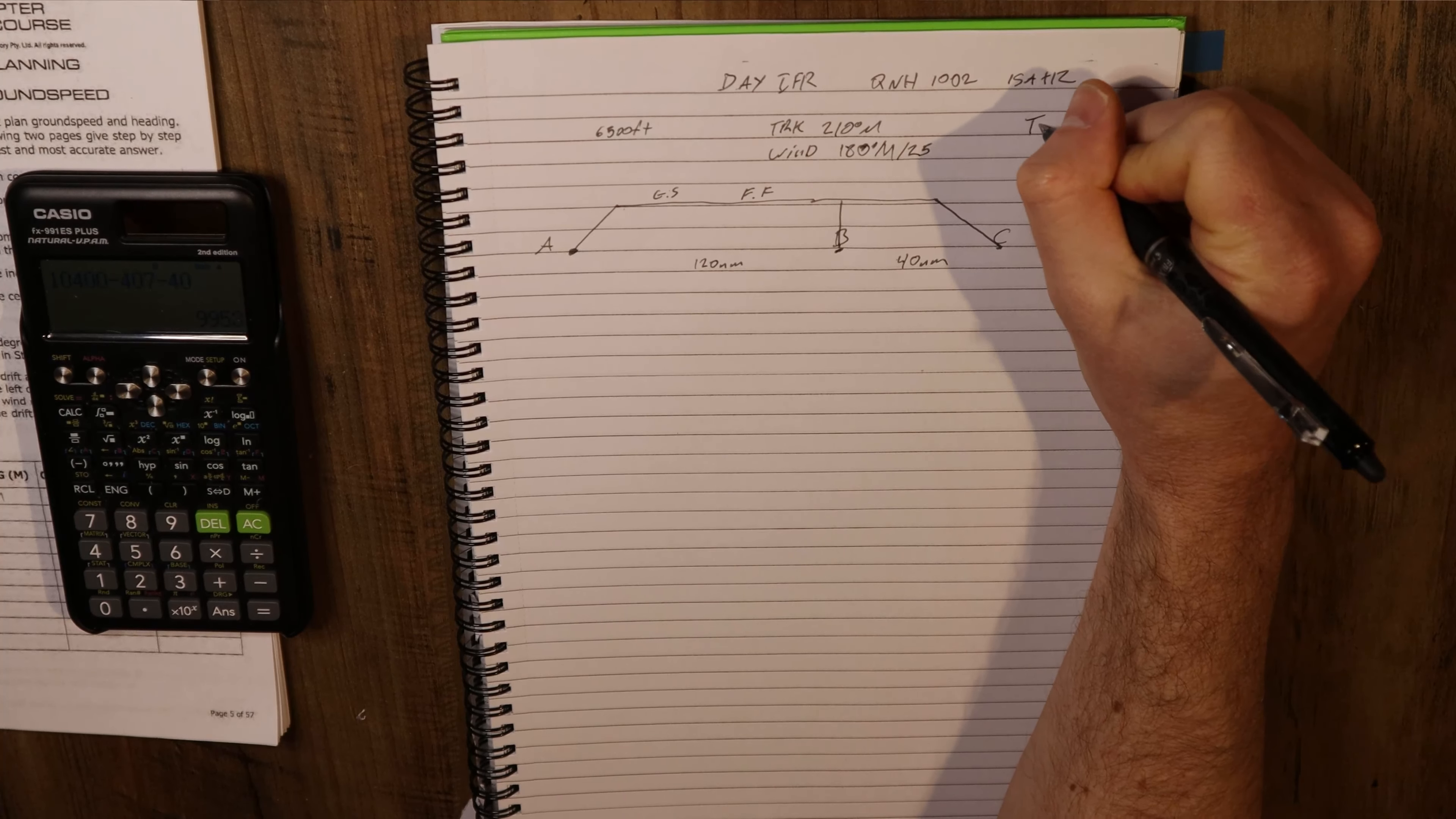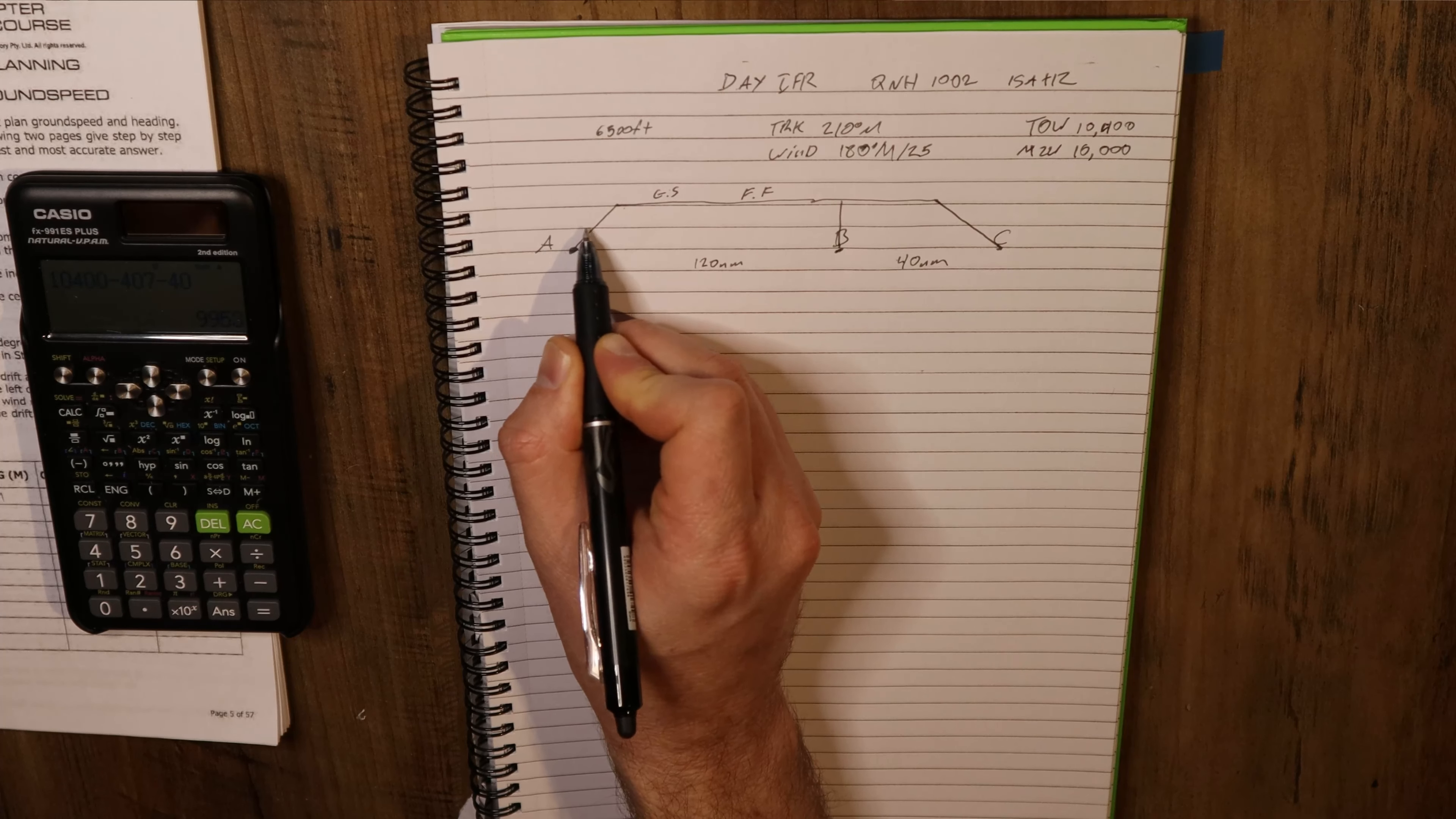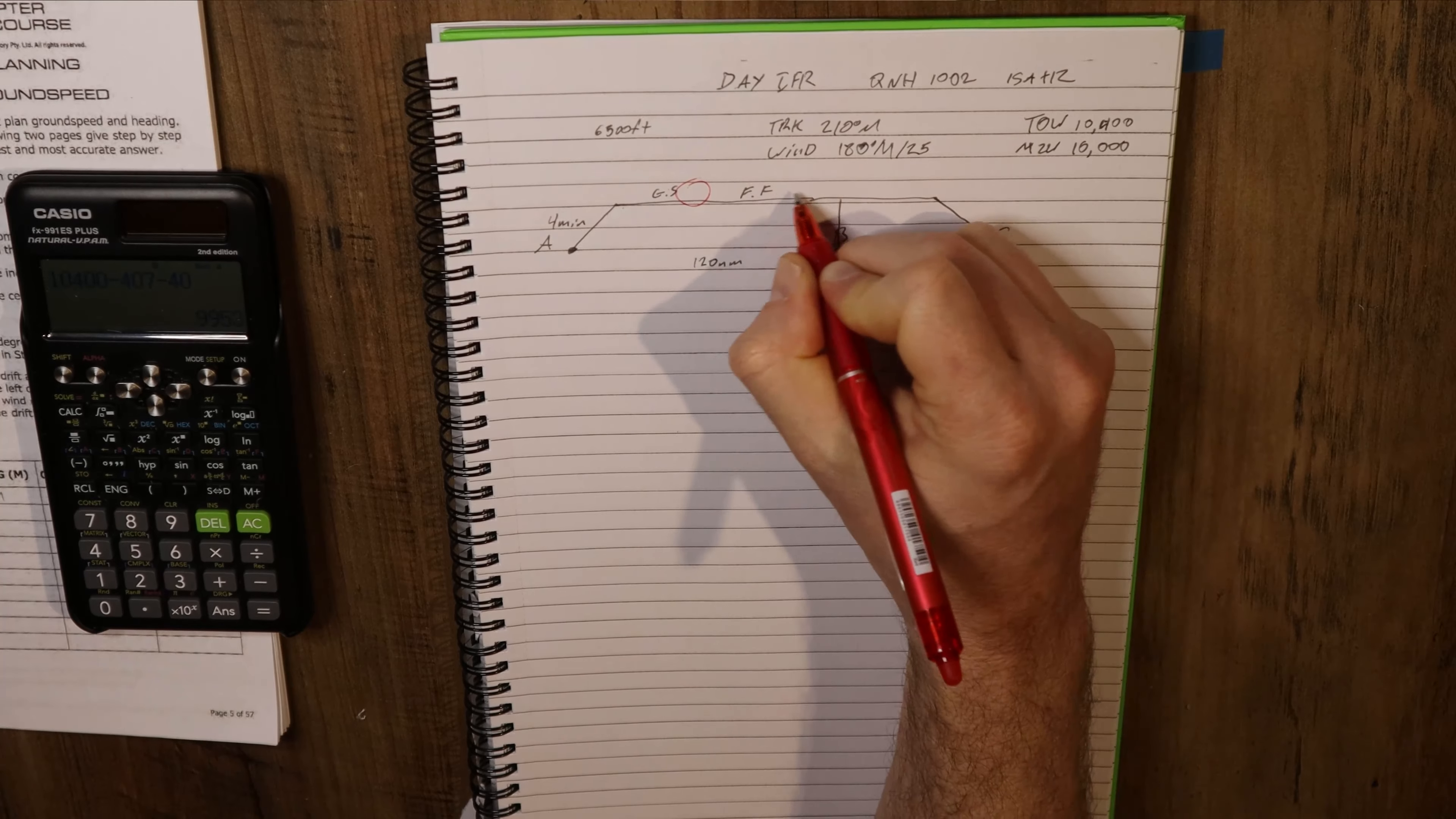We've already worked out the mid-zone weight, so we'll write takeoff weight 1400, mid-zone weight 1000 from the previous video. Now that we have this template or plan written out, one of the first things I like to do is write in the climb, how many minutes this is going to be. We've got 6500 feet that we're climbing up to. Remember we round to the nearest 2000, so that's going up to 8000. One minute per 2000 feet, that means 4 minutes.